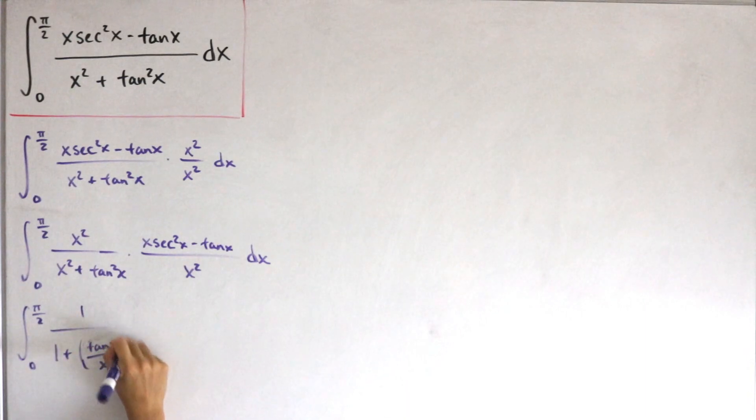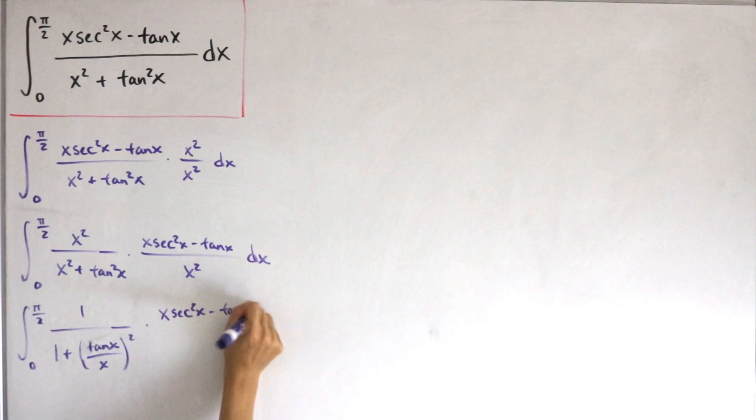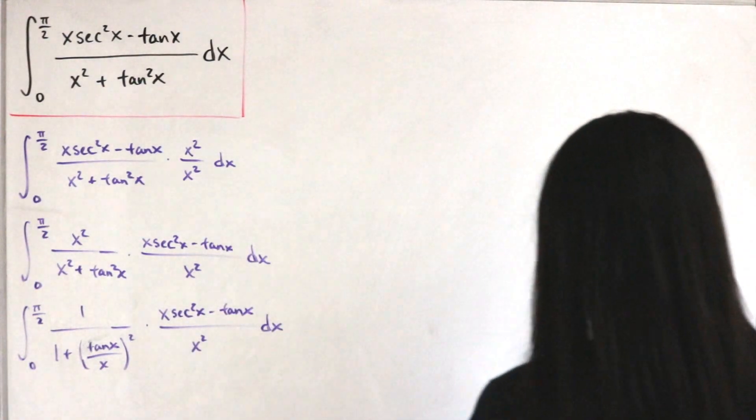Multiply this with x·sec²x - tan x divided by x², and then multiply by dx. So there's our differential. Alright, so now what u-substitution are we going to use?